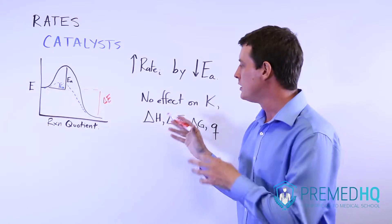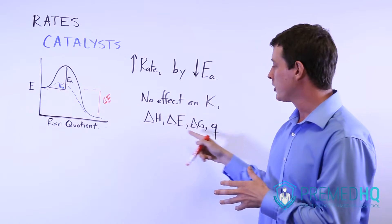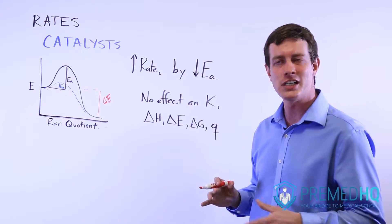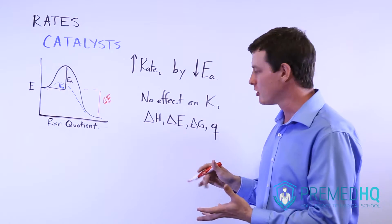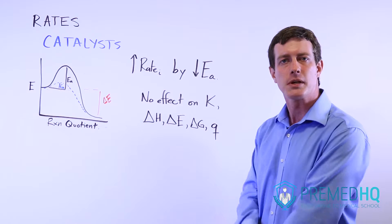And this delta energy could be the change in enthalpy, the change in Gibbs free energy, or expressed in the thermicity. It could be exothermic—it will be the same amount exothermic.